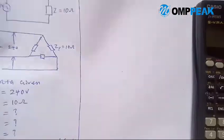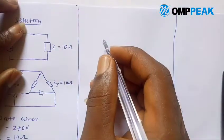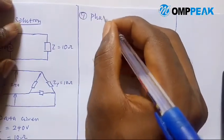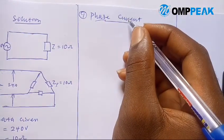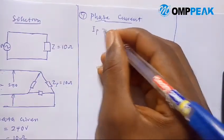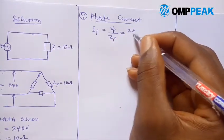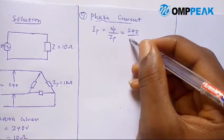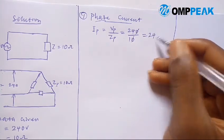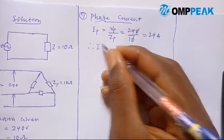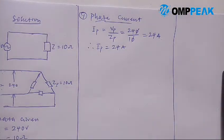Number one: phase current. The phase current Ip equals Vp over Zp. Vp is 240 and our phase impedance is 10, so 240 divided by 10 gives us 24 amperes. Therefore, the phase current is 24 amperes.